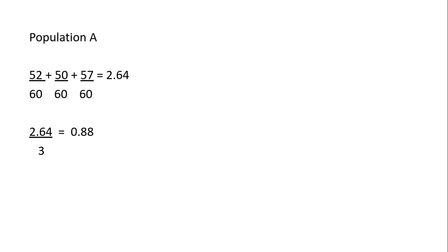For population A we had 52, 50, and 57 polymorphic loci, so I do each one divided by 60 because 60 was the total number of loci looked at. That gives me a sum of 2.64, and then I divide by three because we looked at three different loci, giving me 0.88.